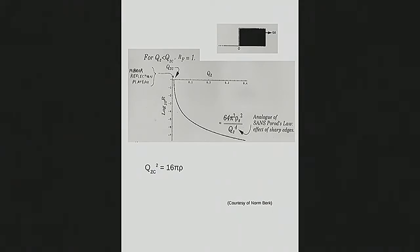What do reflectivity profiles look like for typical samples? Suppose you have a semi-infinite slab of material with a very sharp edge and a neutron or X-ray reflects from its surface. The reflectivity is plotted versus wave vector transfer: up to some critical angle given by Qc = √(16π ρ), the reflectivity is unity — 100%. Every neutron, every photon that comes in gets reflected back at the specular angle. Once you go past that critical edge, the scattering falls off as 1/Q⁴, just like Porod scattering in small-angle scattering.